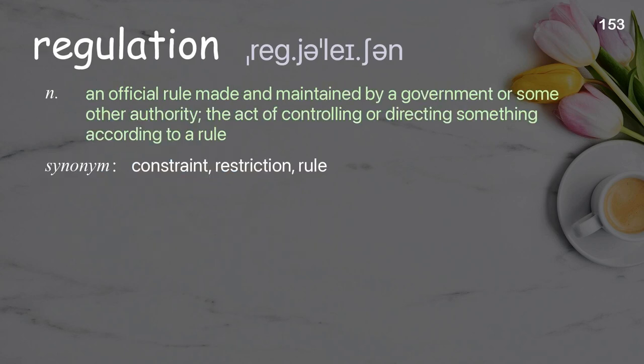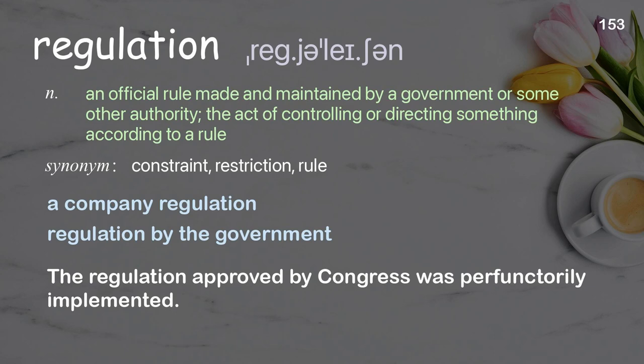Regulation: an official rule made and maintained by a government or some other authority; the act of controlling or directing something according to a rule. Examples: a company regulation, regulation by the government. The regulation approved by Congress was perfunctorily implemented.